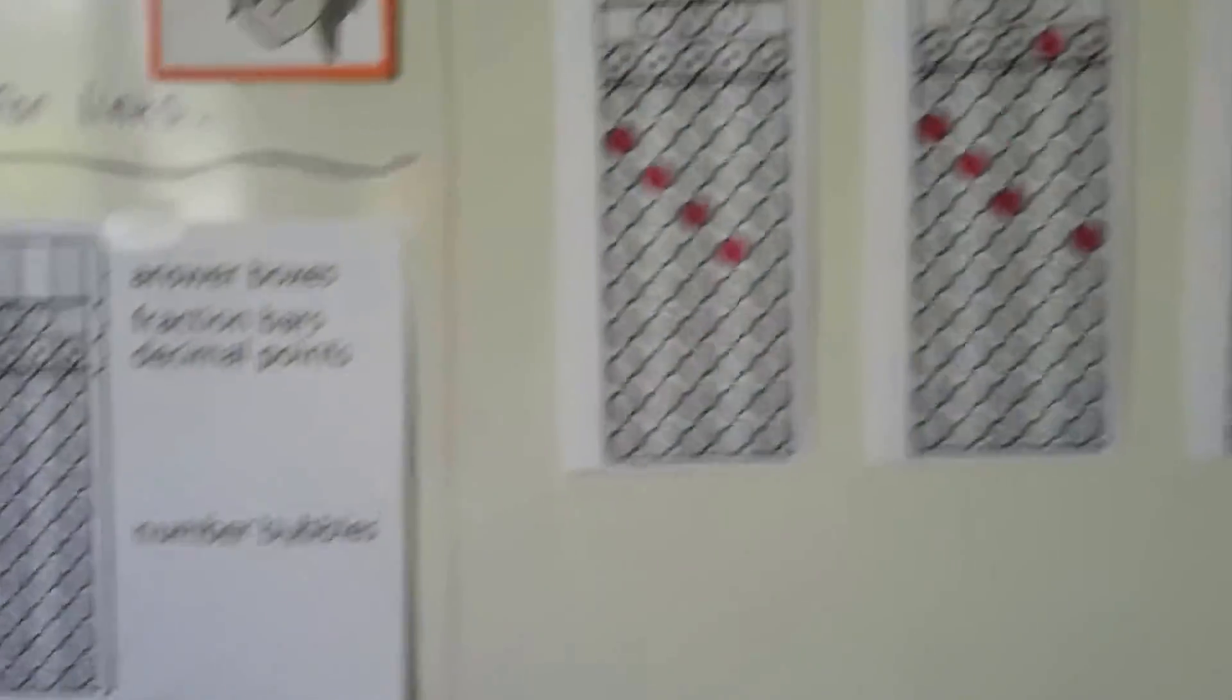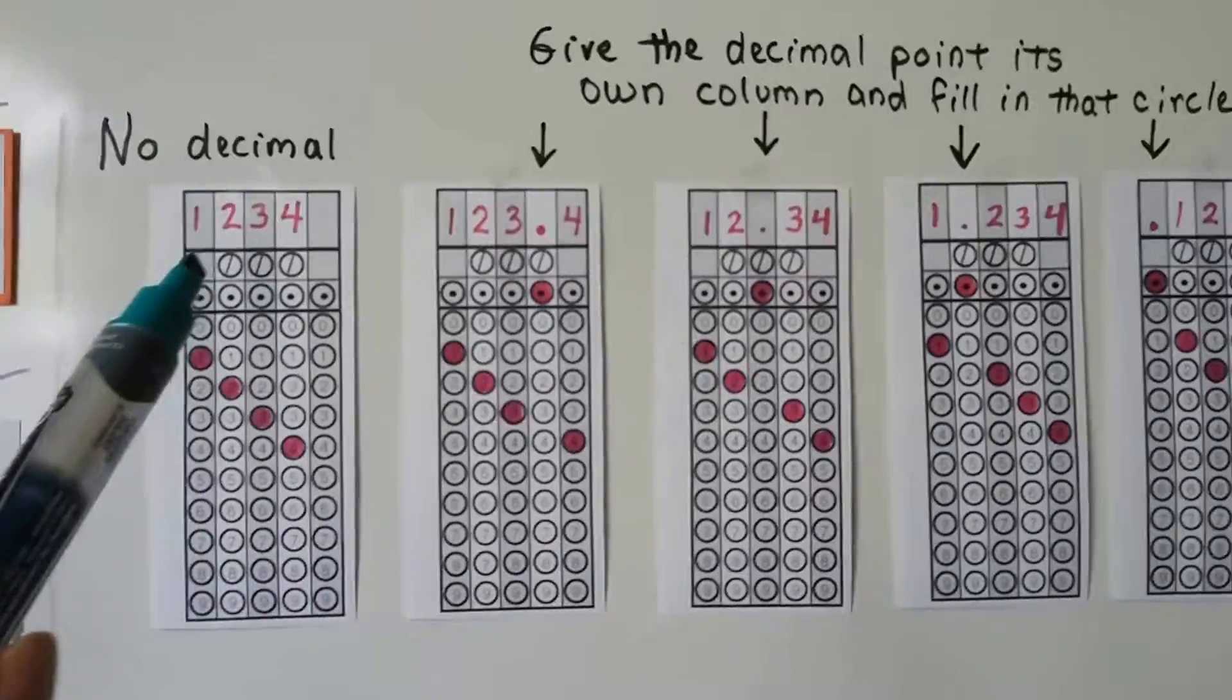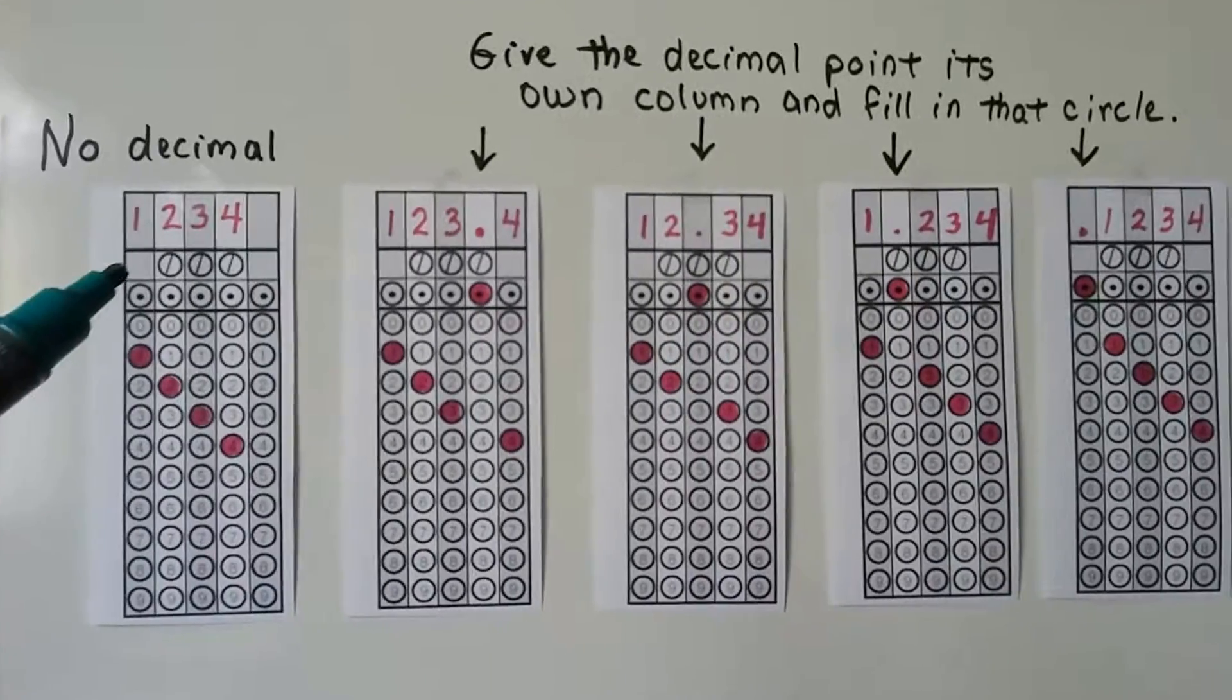In this first one, here's no decimal. We just wrote in the whole number 1,234. There's no commas.